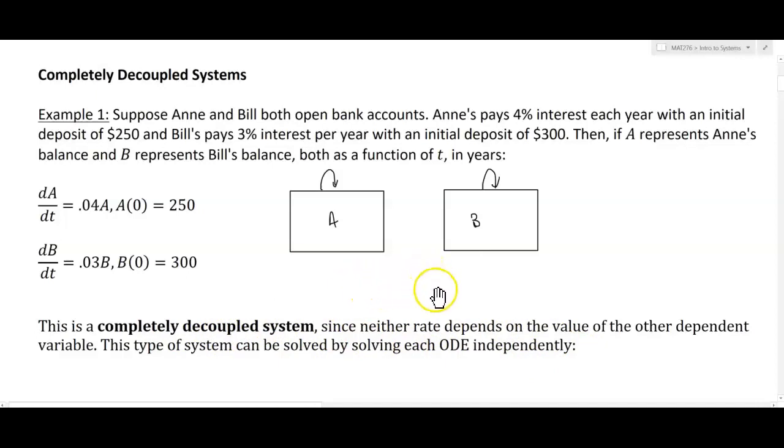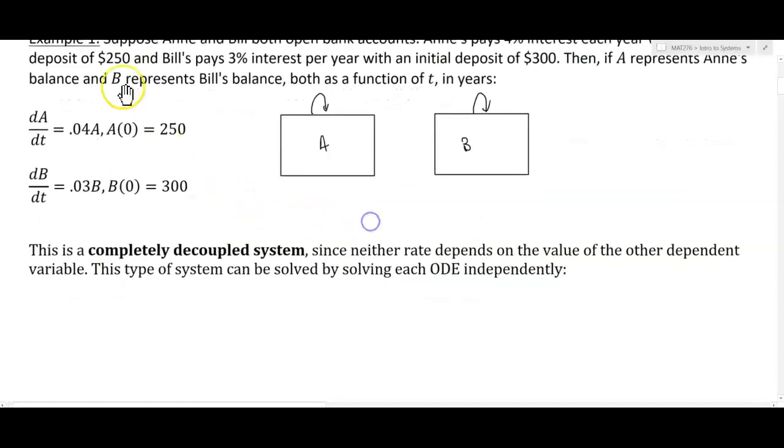So this is a completely decoupled system since neither rate depends on the value of the other dependent variable. This type of system can be solved by solving each ODE independently. In fact, there isn't much to do here, because if we could solve this by itself with separation of variables.